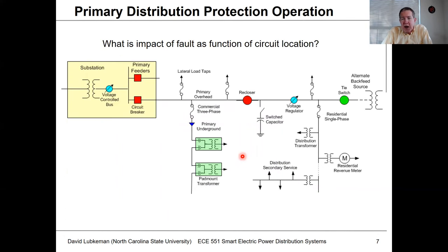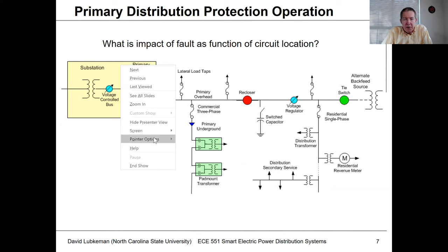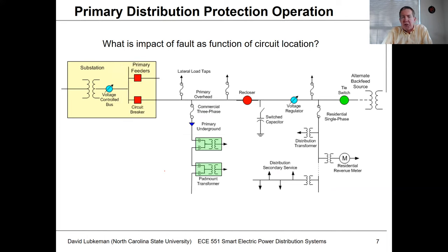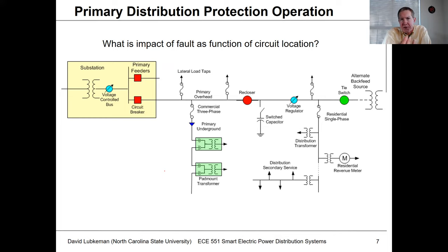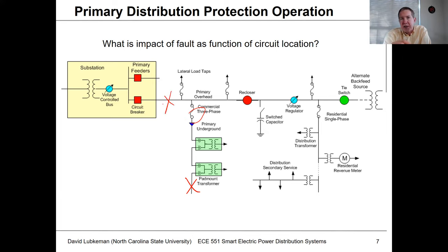Going back to the diagram we've been using for distribution circuits — primarily used for voltage regulation — here's what's going on as far as reliability and how it links to protection. You're going to have different sorts of faults that occur on circuits; it's just a fact of life. If we had a fault on this piece of cable right here, we'd expect the fuse to blow. If we had a fault on this overhead section coming out of the substation, we'd expect the circuit breaker to operate.